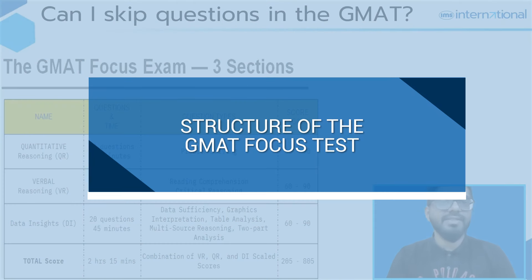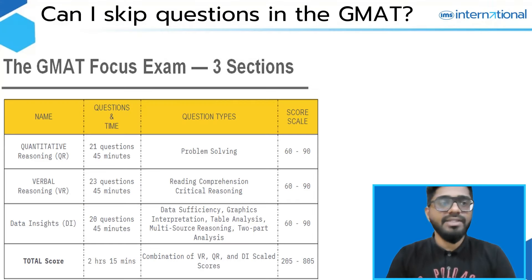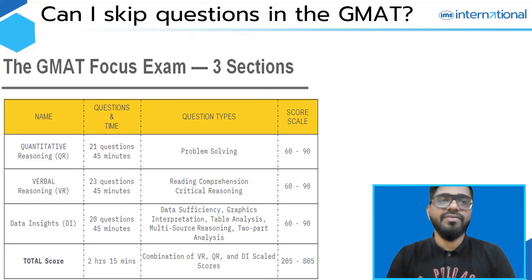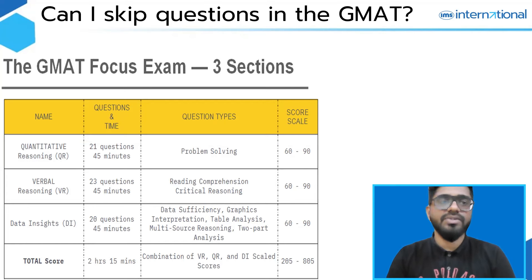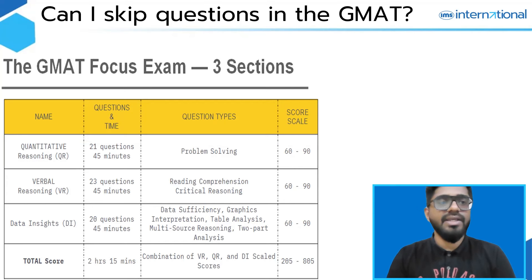The structure of the GMAT Focus exam is as follows. The exam has three sections: quantitative reasoning, verbal reasoning, and data insights, as you can see on the screen. The quantitative reasoning section consists of 21 questions with a time limit of 45 minutes. The verbal reasoning section has 23 questions, again 45 minutes. And the data insights section also has 45 minutes to address 20 questions. So in total, there are 64 questions to be addressed in two hours and 15 minutes.